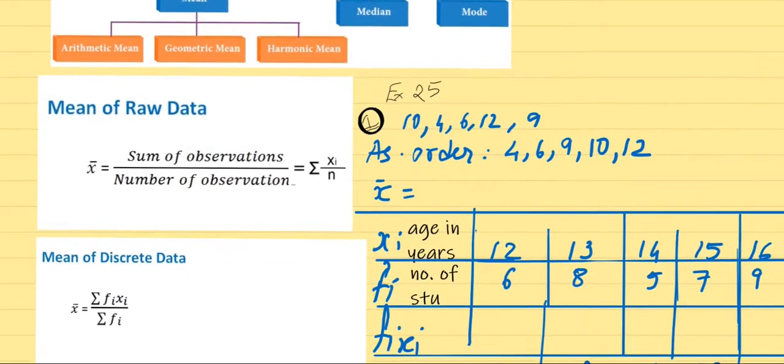Now, let us start with the formulas first. The first formula is for raw data. So raw data, sum of all observations, that is summation xi upon n. So what we have to do, these are all my observations as you can see here. If I find the sum of all, I will call it summation xi. How much will it be?